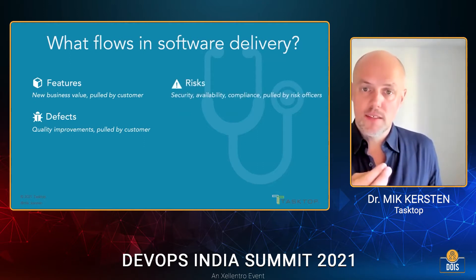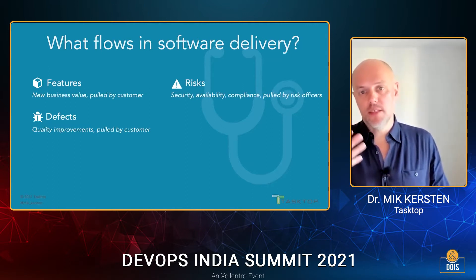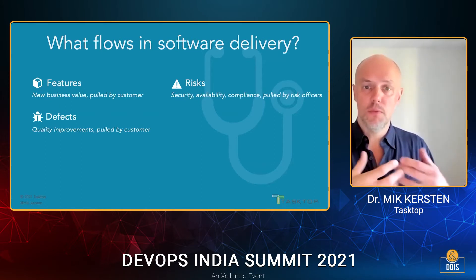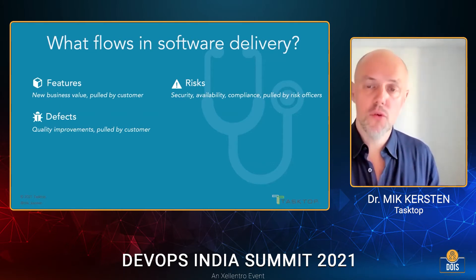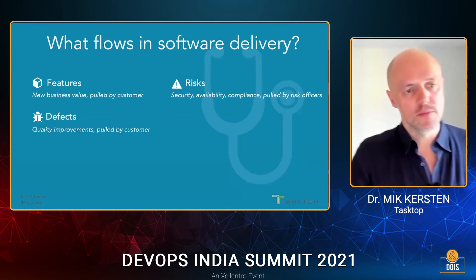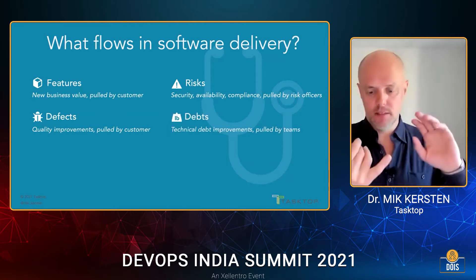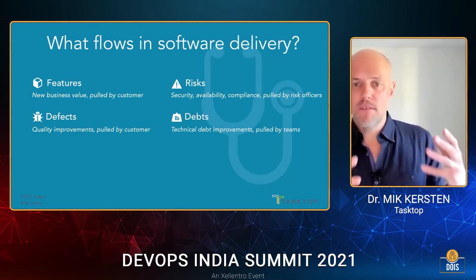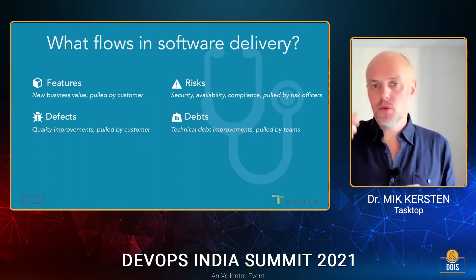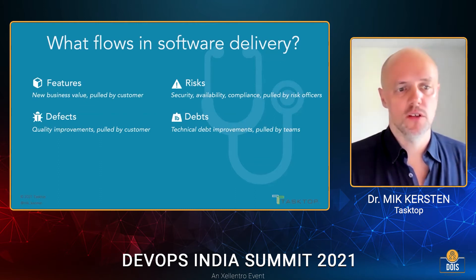The Flow Framework makes risks a first-class part of software delivery. Those risks are data privacy, compliance, security, and the like — we need to keep a balance on those because they're critical both to the business and to the customer to avoid things like data breaches. The flow framework also makes debts — organizational debt, technical debt, process debt — a first-class flow item. The more that we resolve those debts, the more we should improve future flow and make sure that we're building platforms that support our organization in the future.